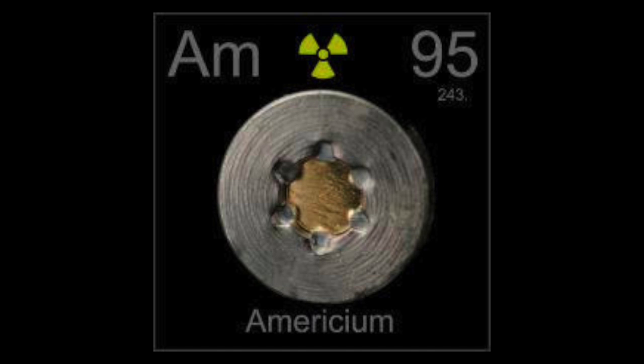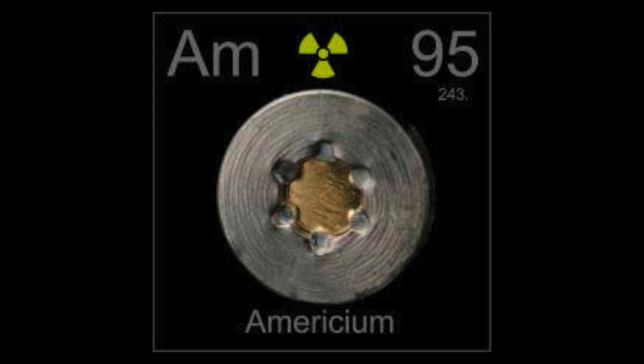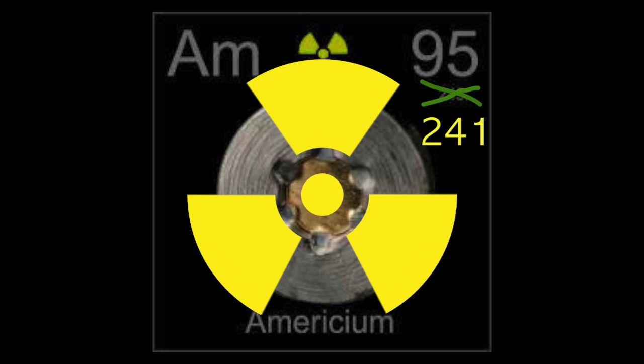All right, this is experiment 16.1 for Physics 2. We're going to be discussing alpha radiation from our americium source and a zinc sulfide screen. Now this is americium-241, not americium-243, and this gives off alpha radiation particles.